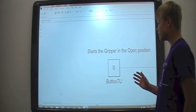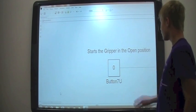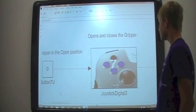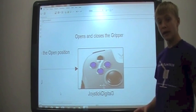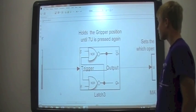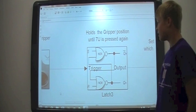This line of code is used to code the gripper. This block right here starts the gripper in the open position. As you can see, digital seven up controls the opening and the closing of the gripper. This latch button holds the gripper's position until seven up is pressed.